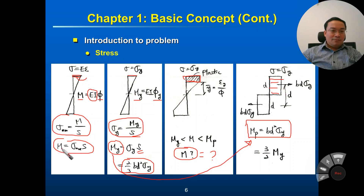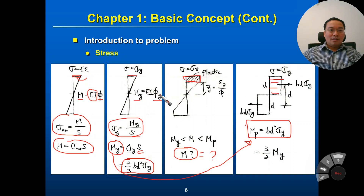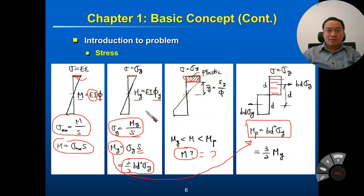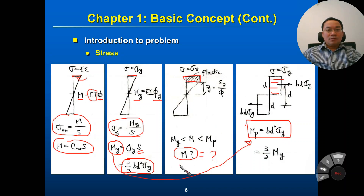So now we have M and κ in the elastic phase, My and κy at the yielding limit state, and Mp at the fully plastic state. Mp = b·d²·σy. The moment M between My and Mp is what we still need to determine.